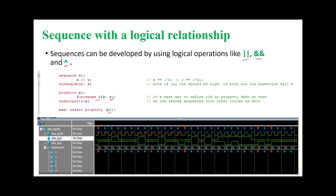Looking at the waveform: assertion is failing at the first clock edge because the values of x and y are both zero — if both are low simultaneously the assertion fails. At the next clock edge x is 0 and y is 1, so one is high and the assertion passes. Then x is 0 and y is 1 again — assertion passes. Then x is 1 and y is 1, both are 1, so the assertion is passing.